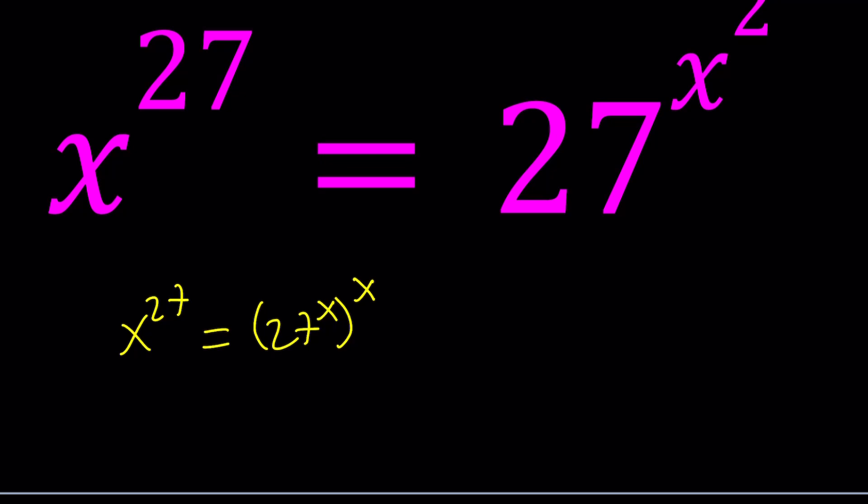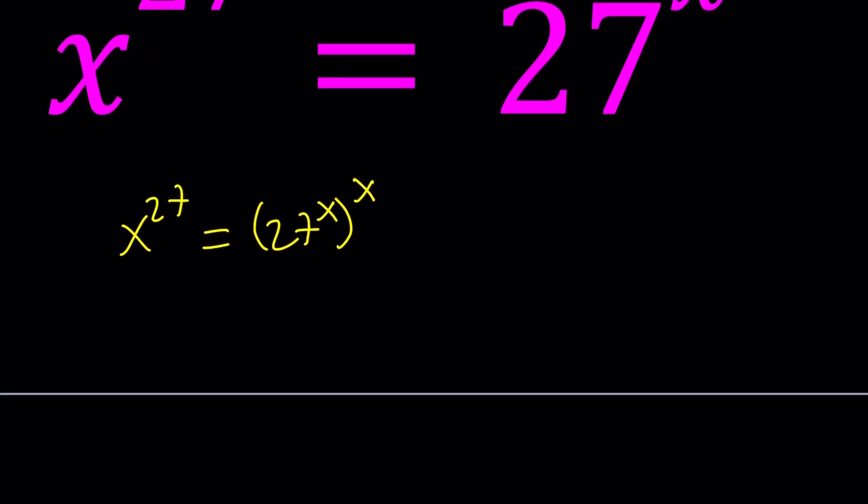I can cube root both sides, so I can write this as x to the power 9 to the 3rd. To be able to cube root this, I'm going to think about 27 as 3 to the 3rd power. So we can write this as 3 to the power x to the power x and then finally cubed.